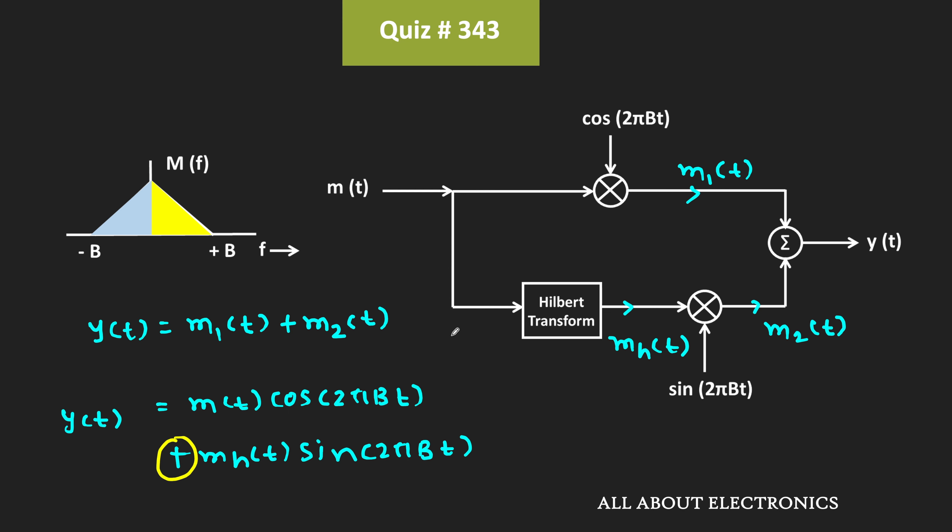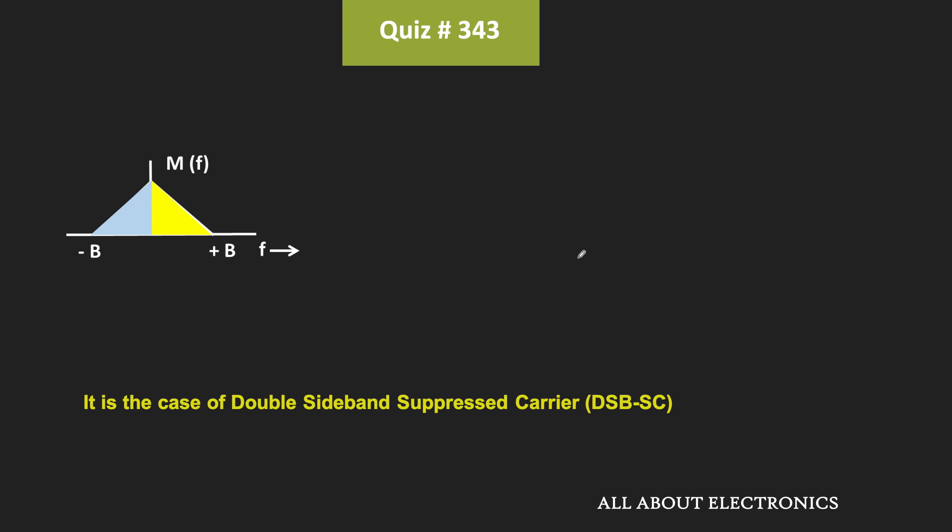So if we multiply this signal MT with cos 2πBT, then this entire spectrum will get shifted by plus minus B. And in this case, we will get this type of spectrum.